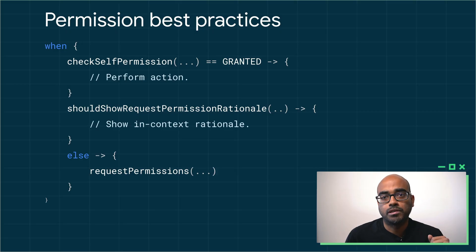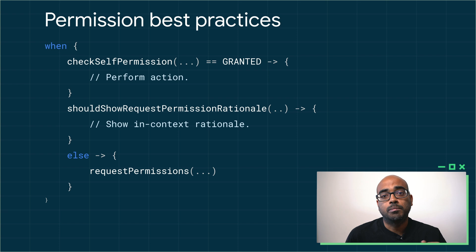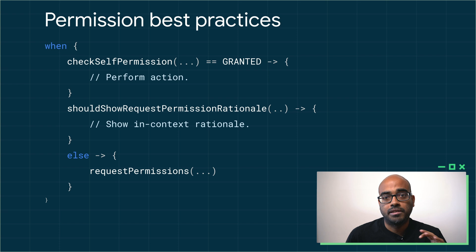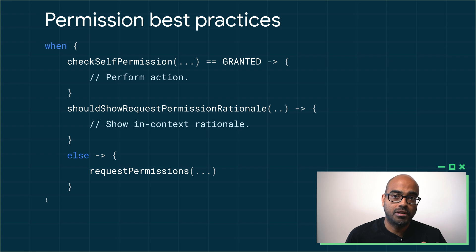I'd like to quickly segue into these best practices because I believe they're worth repeating, even if you've already heard them before. First, we recommend that apps always check whether they hold a given permission before performing any action that requires it. This state should not be cached or persisted to storage as it can get out of sync with system state. Furthermore, apps should fail gracefully and offer an appropriate subset of their functionality in cases where the user declines a permission.